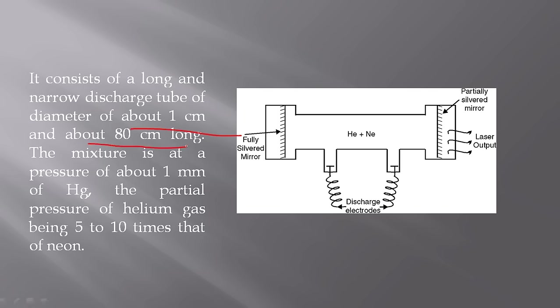The mixture is at a pressure of about 1 mm of mercury, the partial pressure of Helium gas being 5 to 10 times that of Neon.